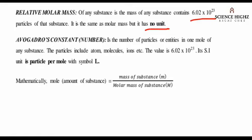Avogadro's Constant or Number is the number of particles or entities in one mole of any substance. The particles include atoms, molecules, ions, etc. The value is 6.02 times 10 raised by 23. Its SI unit is particles per mole with the symbol capital L.